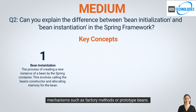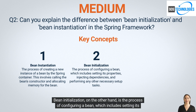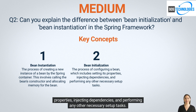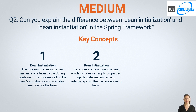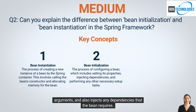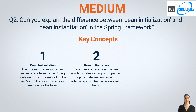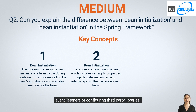In some cases, instantiation may involve other mechanisms such as factory methods or prototype beans. Bean initialization, on the other hand, is the process of configuring a bean, which includes setting its properties, injecting dependencies, and performing any other necessary setup tasks. This process occurs after the bean has been created by the container. During initialization, the container sets the properties of the bean using either setter methods or constructor arguments, and injects any dependencies the bean requires. Developers can also register event listeners or configure third-party libraries during initialization.